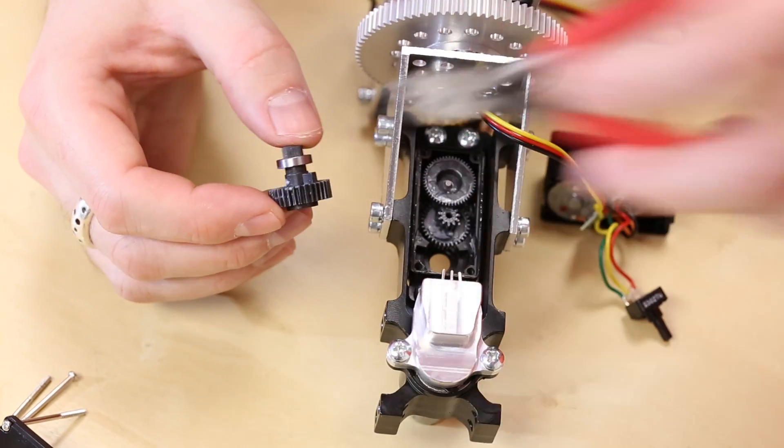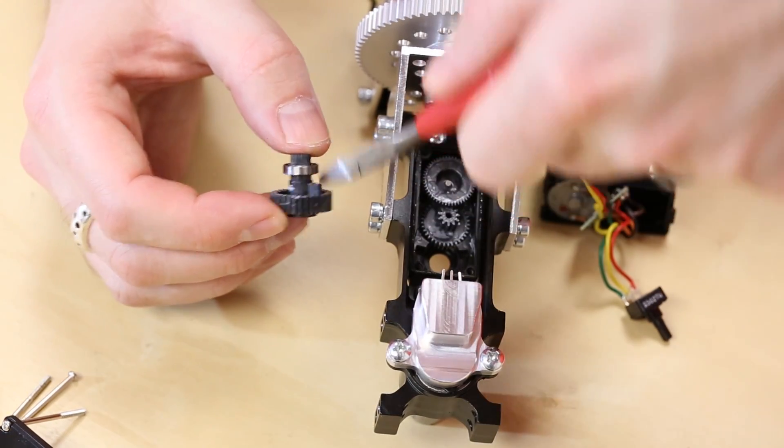Thankfully this is actually a plastic gear so I'm just going to use a pair of diagonal cutters to just clip it off.